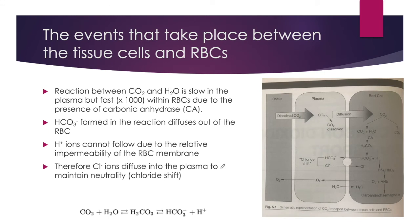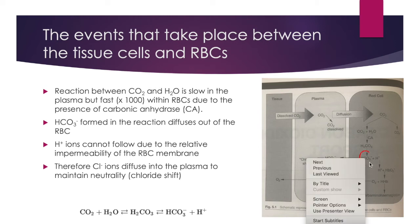We will now look at the events that take place between the tissue cells and red blood cells. The reaction between CO2 and water is slow in the plasma, but much faster within red blood cells due to the presence of carbonic anhydrase. Bicarbonate formed in the reaction diffuses out of the red blood cell, as we see in this step in the process here.